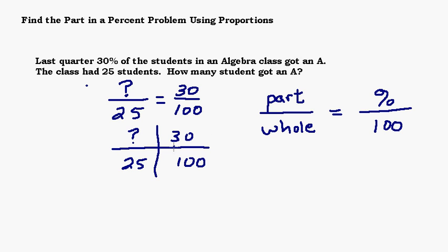So now what you'll notice is that your question mark, whatever it is you don't know, is going to be across from some number, in this case the 100. And then there's going to be two numbers diagonal or across from each other that you do know. So the trick here is to multiply the two numbers that are across from each other, and then divide by the remaining number.